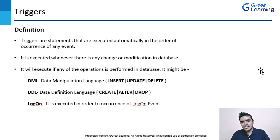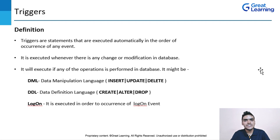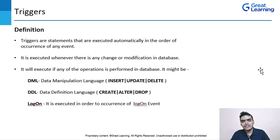A trigger will be executed if any one of the following operations is performed: DML operations, DDL operations, or logon operations. DML means Data Manipulation Language. It is used for the insertion of data, deletion of data, and updating data. So INSERT, UPDATE, and DELETE are all DML commands.